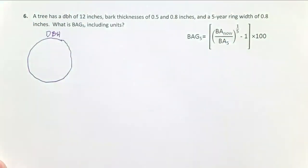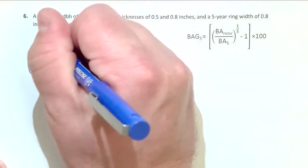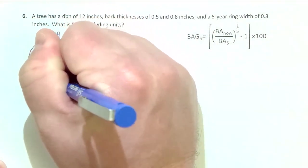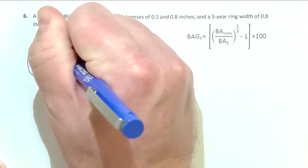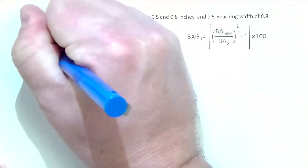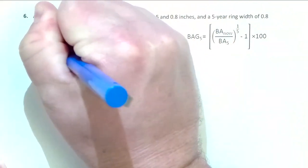Then we use a bark gauge to measure the thickness of the bark. There will be a diameter inside the bark right now, right here. So this is going to be diameter inside the bark now.